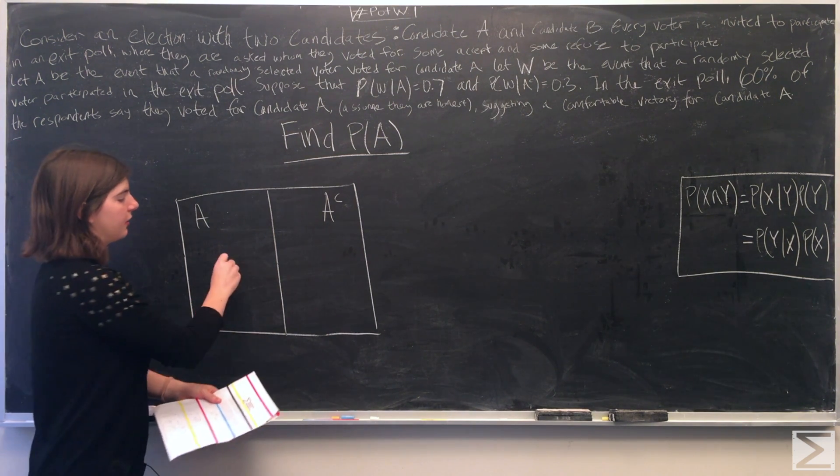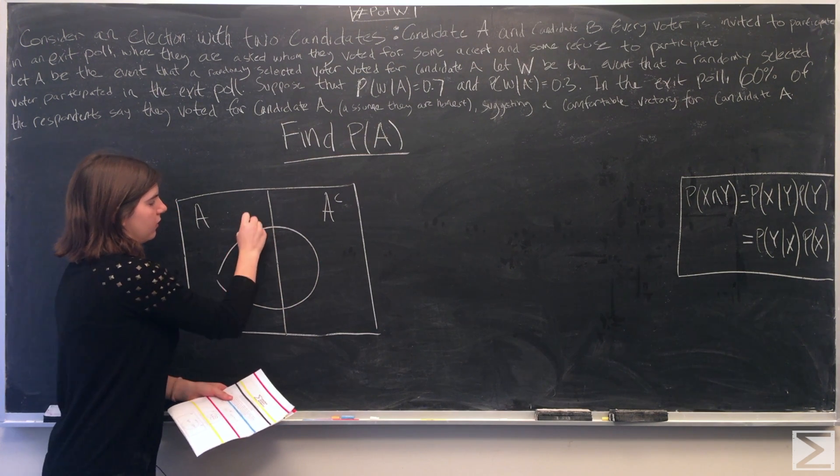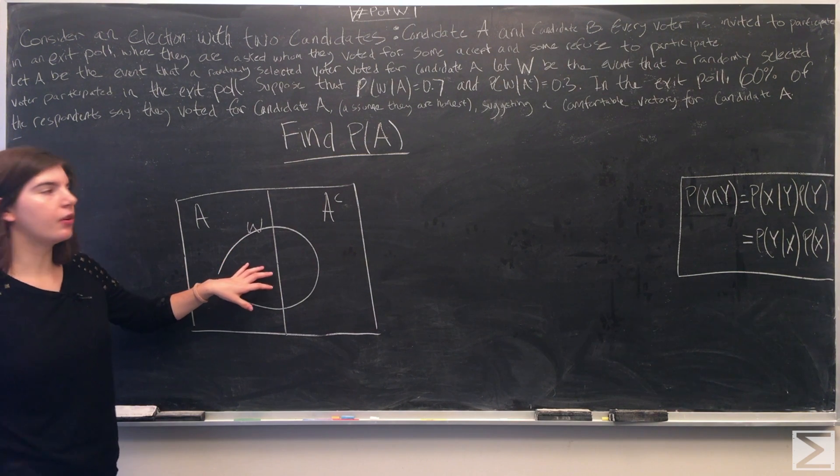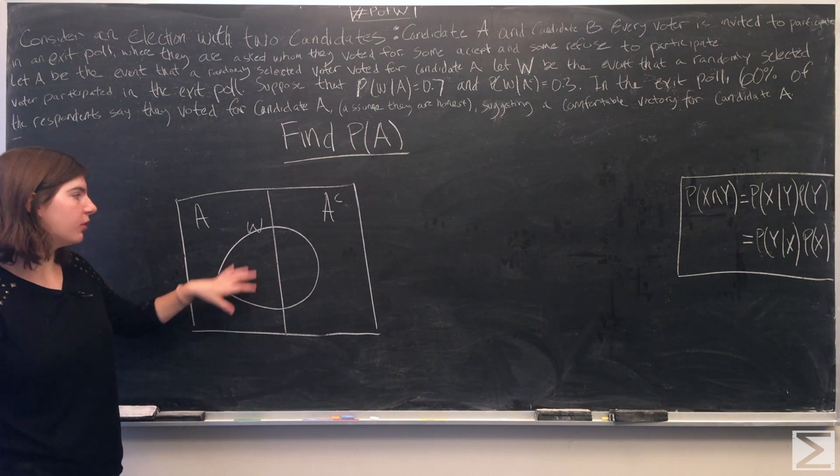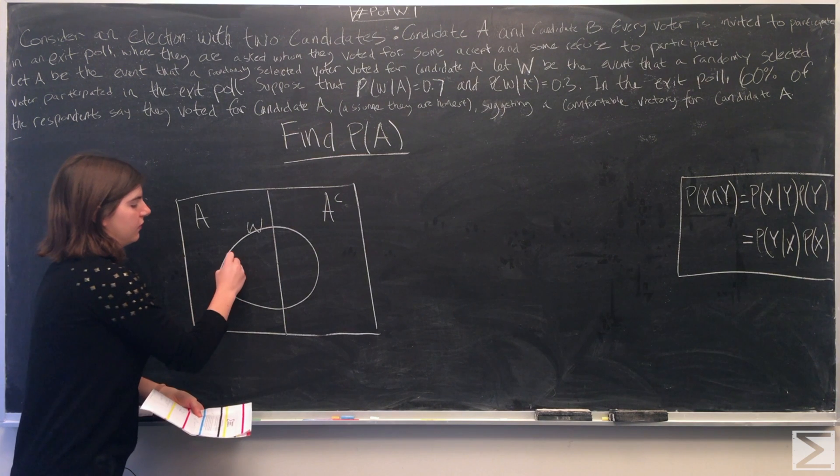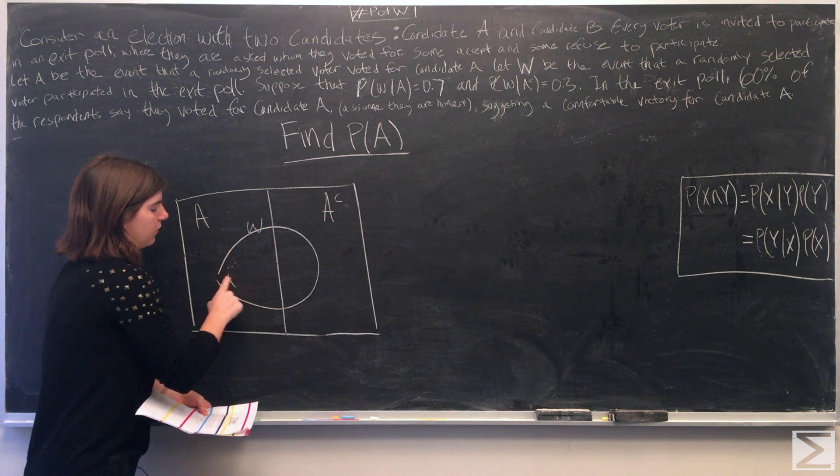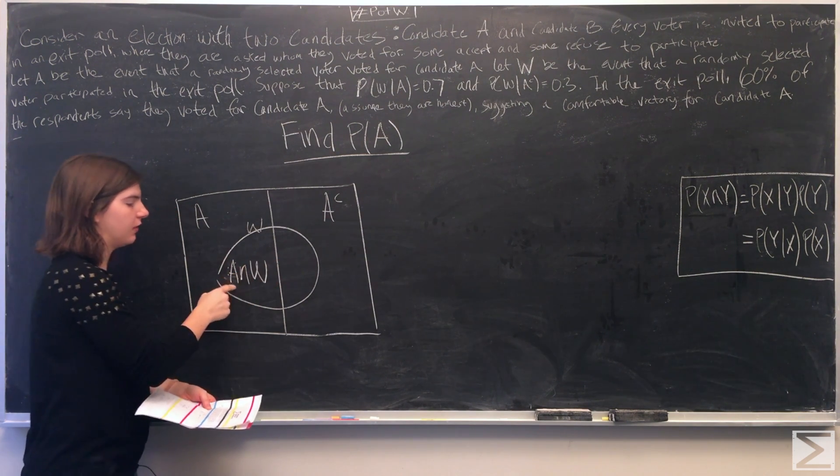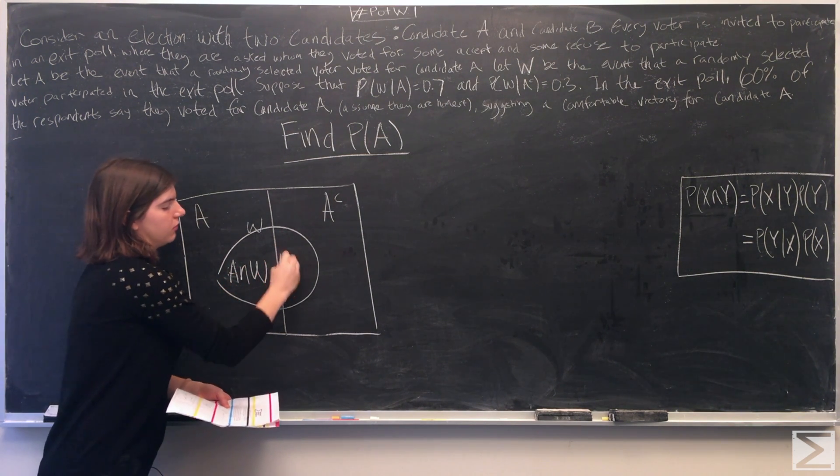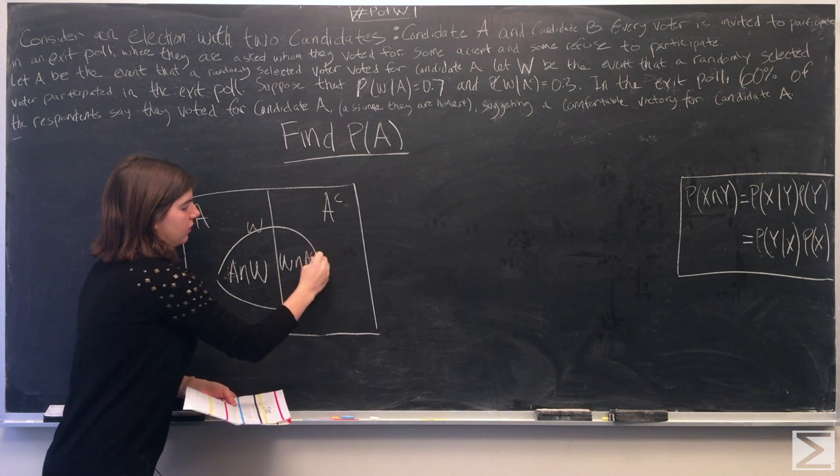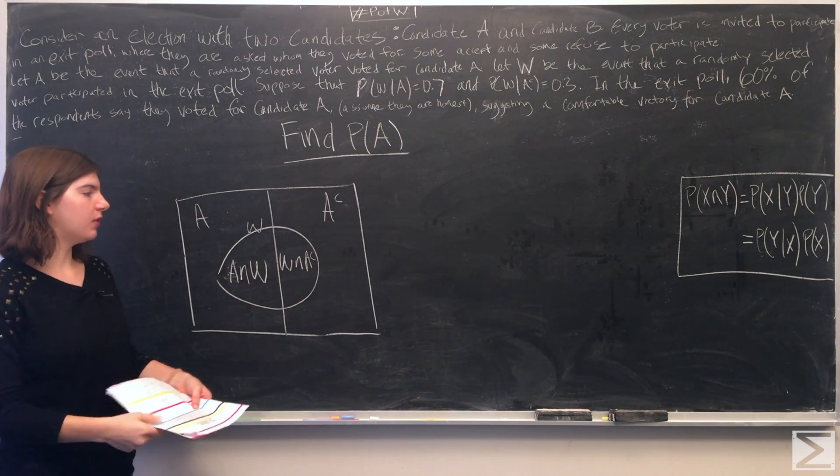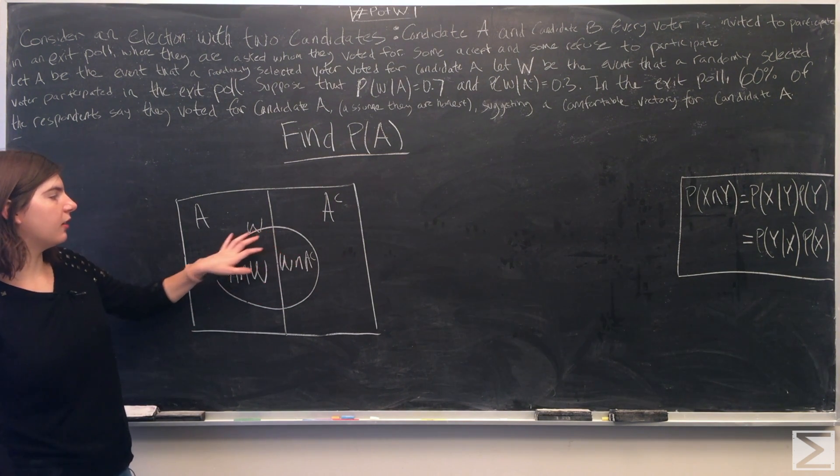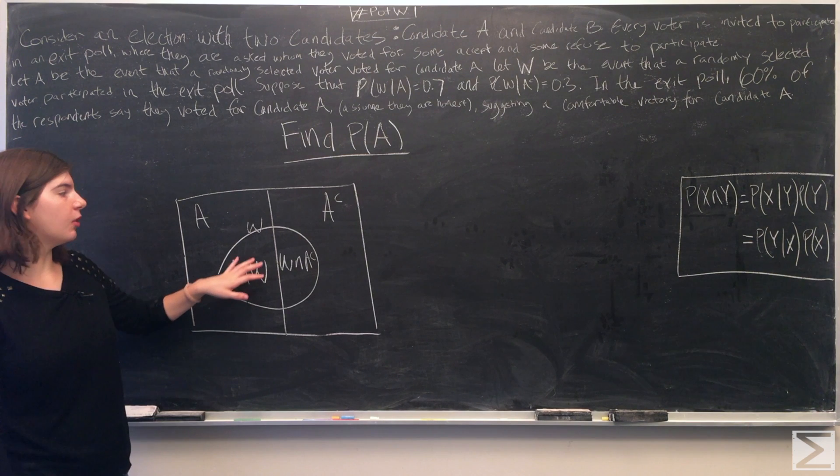And then we have the event that a voter participate in the exit poll. And we can see that this section is the intersection of A and W, and this section is the intersection of W and A complement. And together, these two parts, they span the whole event W.